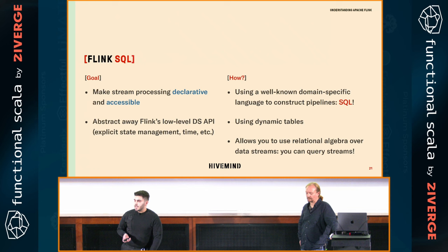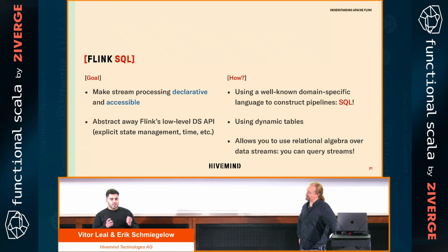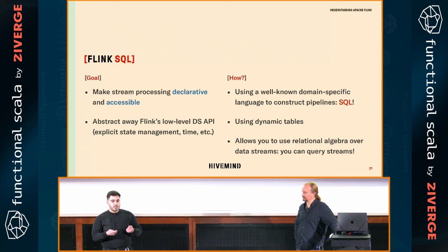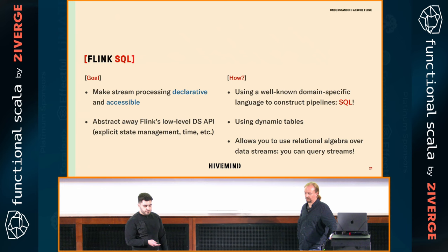Flink SQL allows you to manipulate data streams and do anything that SQL does to the data streams. For example, if you have a stream — a stream of case classes with fields A, B, and C — and you want to project only A and B, with Flink SQL all you have to do is call 'SELECT A, B FROM the event.' It allows you to use relational algebra not for static data, but for streams as well.